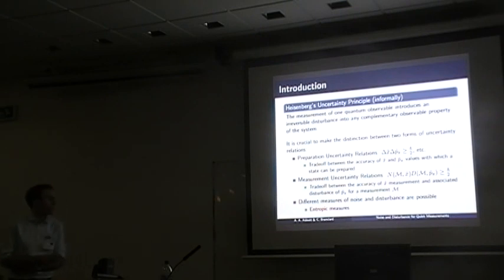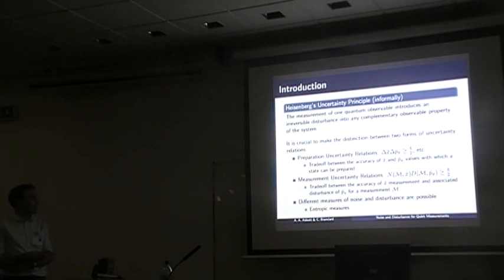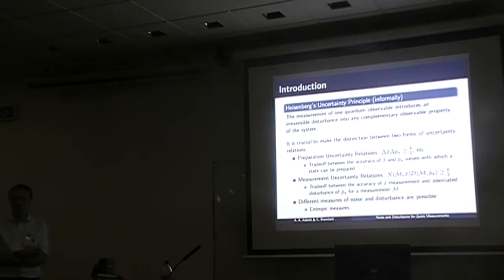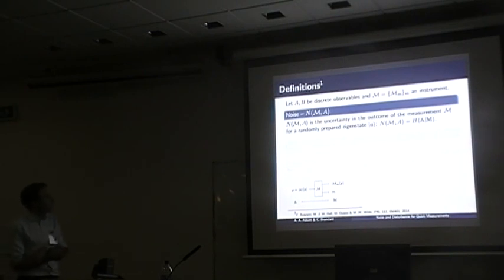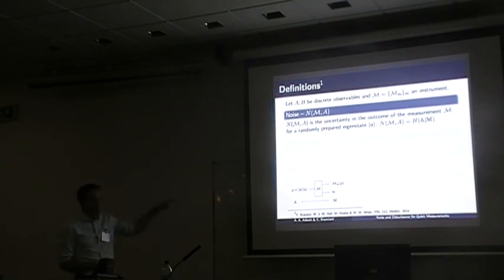There are many different ways to formalize noise and disturbance, and it took a while to come up with decent definitions — which is probably why people mostly talked about preparation uncertainty for a long time. I'll denote some measures of noise and disturbance as N and D. What I want to talk about is a particular entropic definition of noise and disturbance introduced a couple of years ago by Buscemi and co-authors.